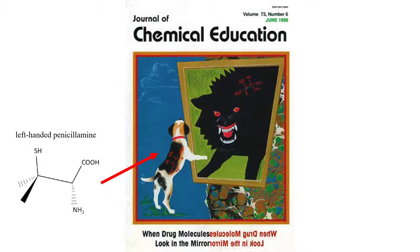Pharmacological activity of many drugs directly depends on their chirality. For example, left-handed penicillamine is widely used in rheumatism treatment and is depicted here as a cute puppy. But when it looks in the mirror, it sees there a terrible monster. And this is not surprising, since right-handed penicillamine could lead to blindness.